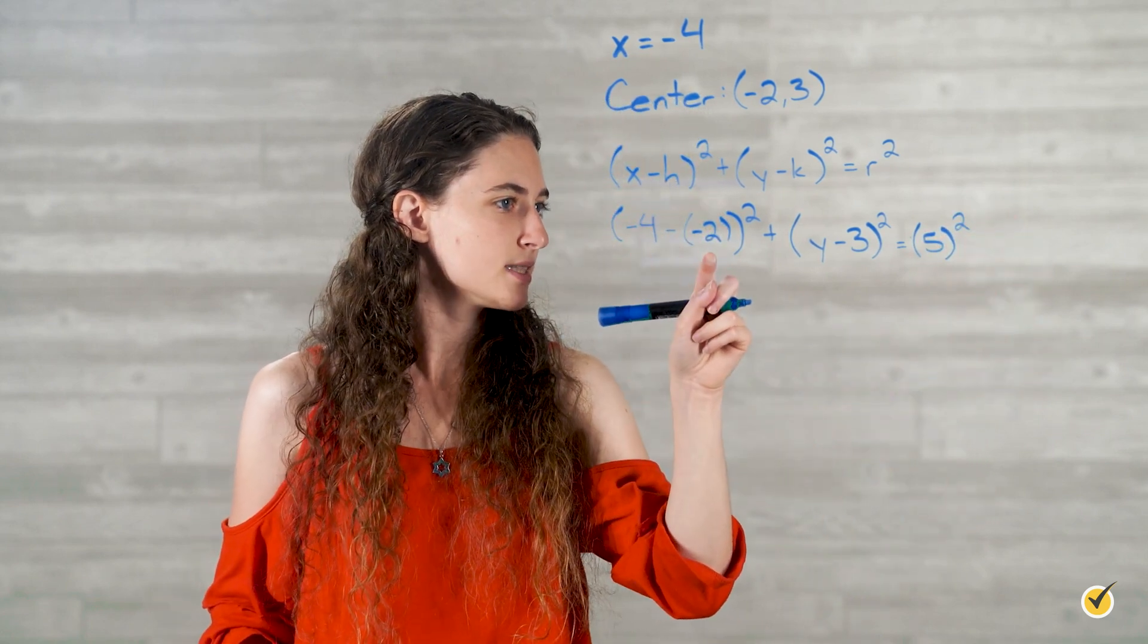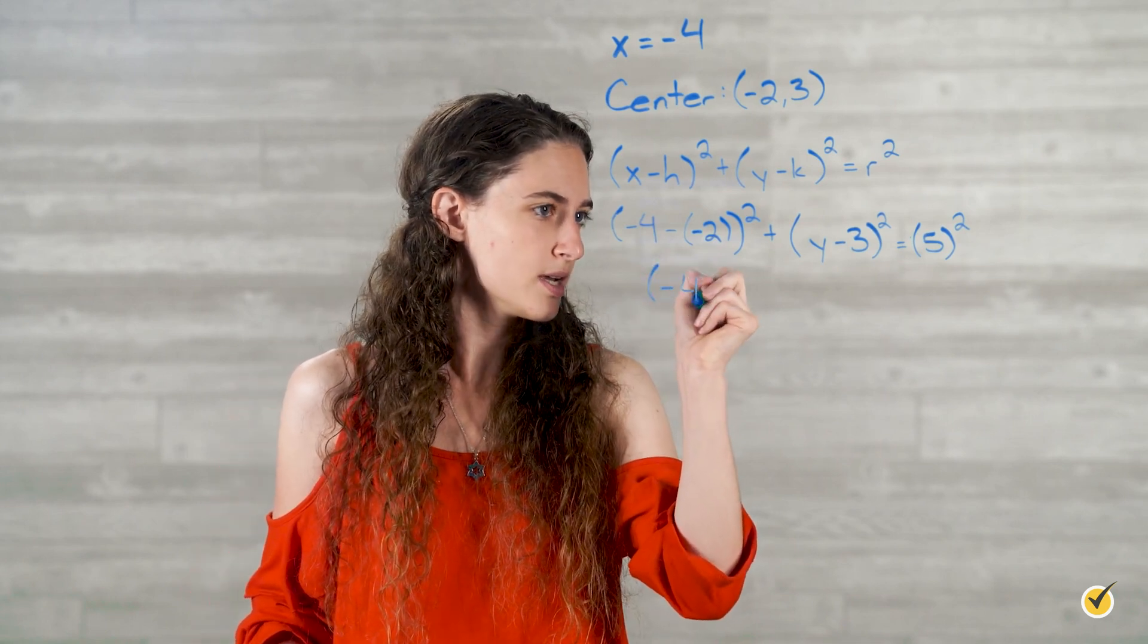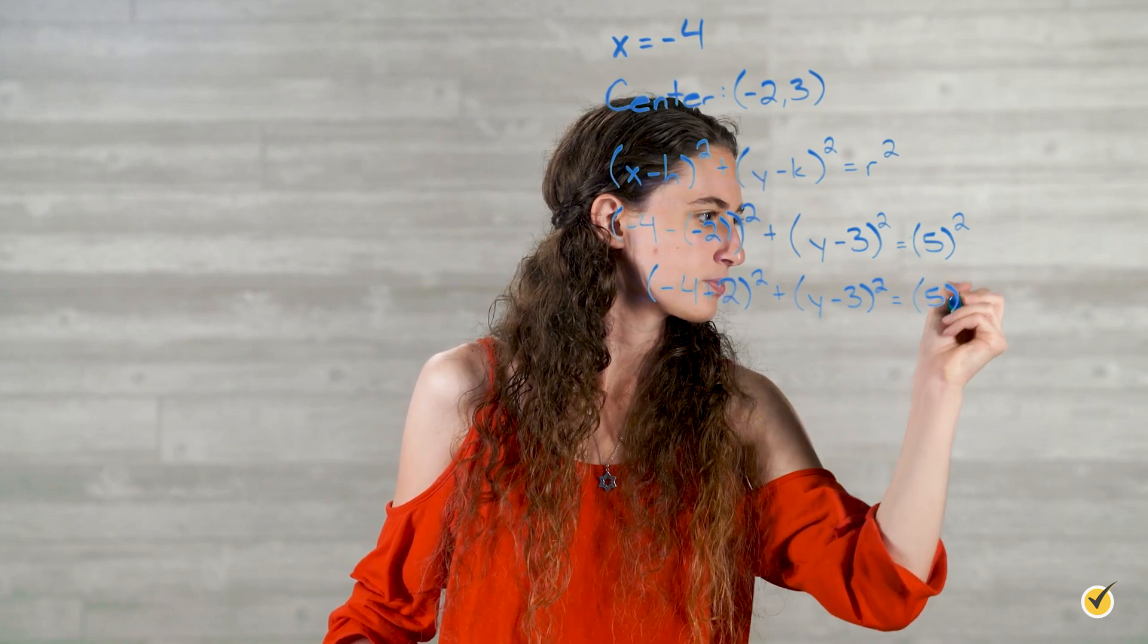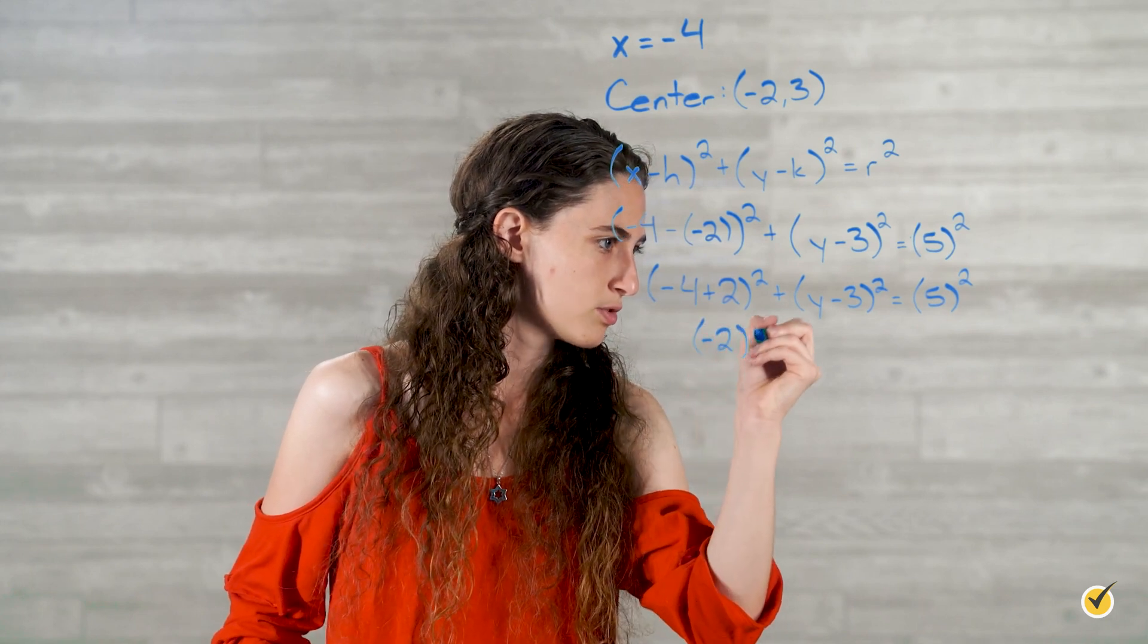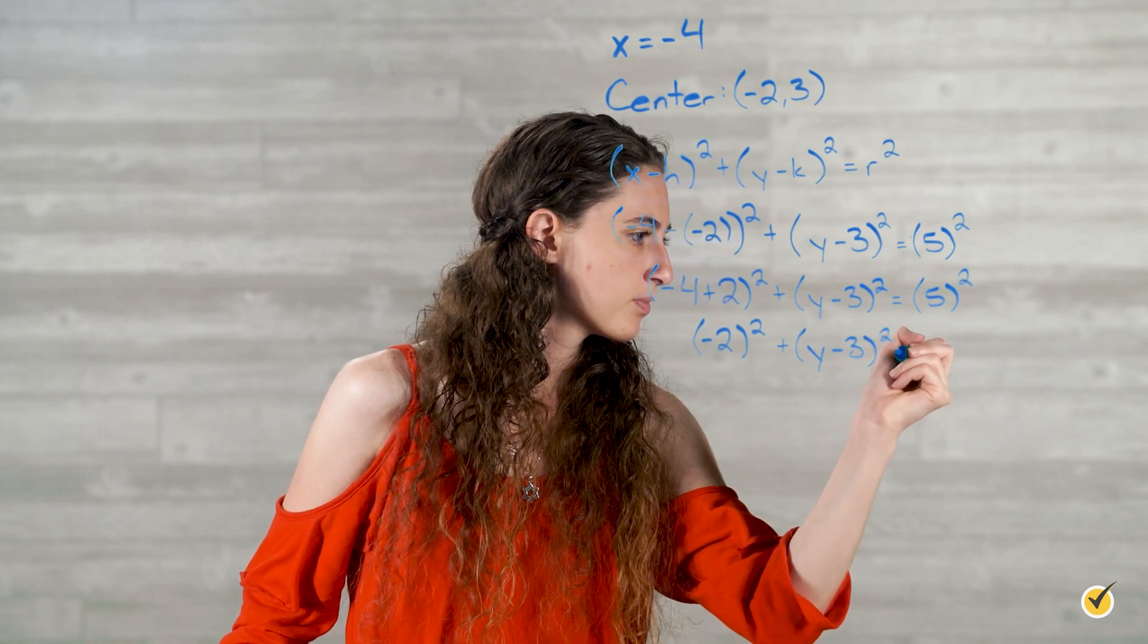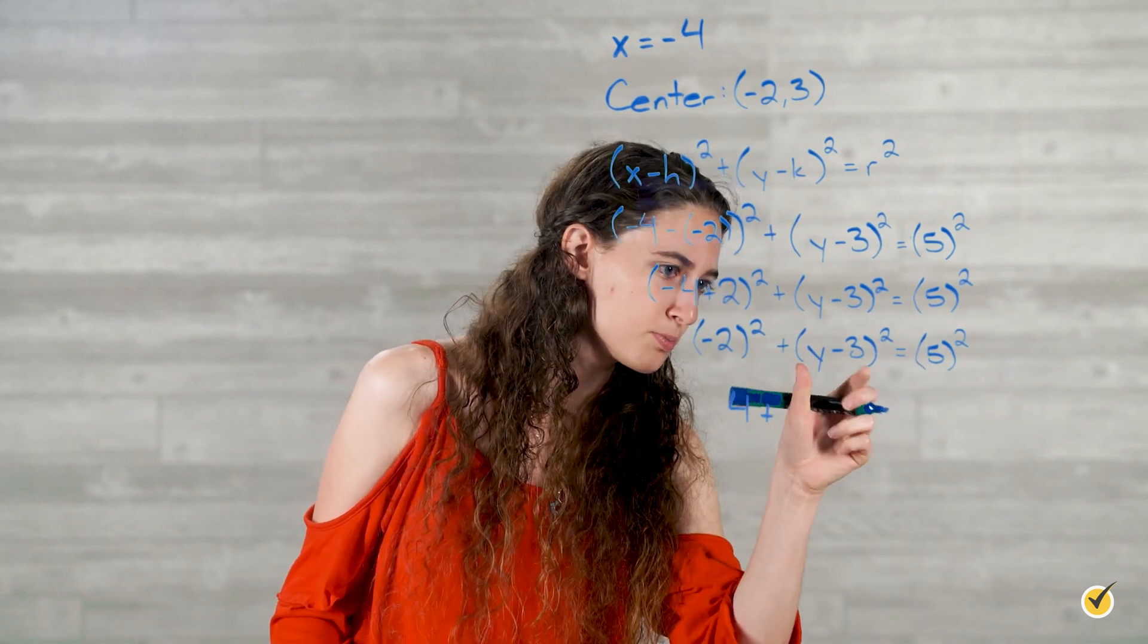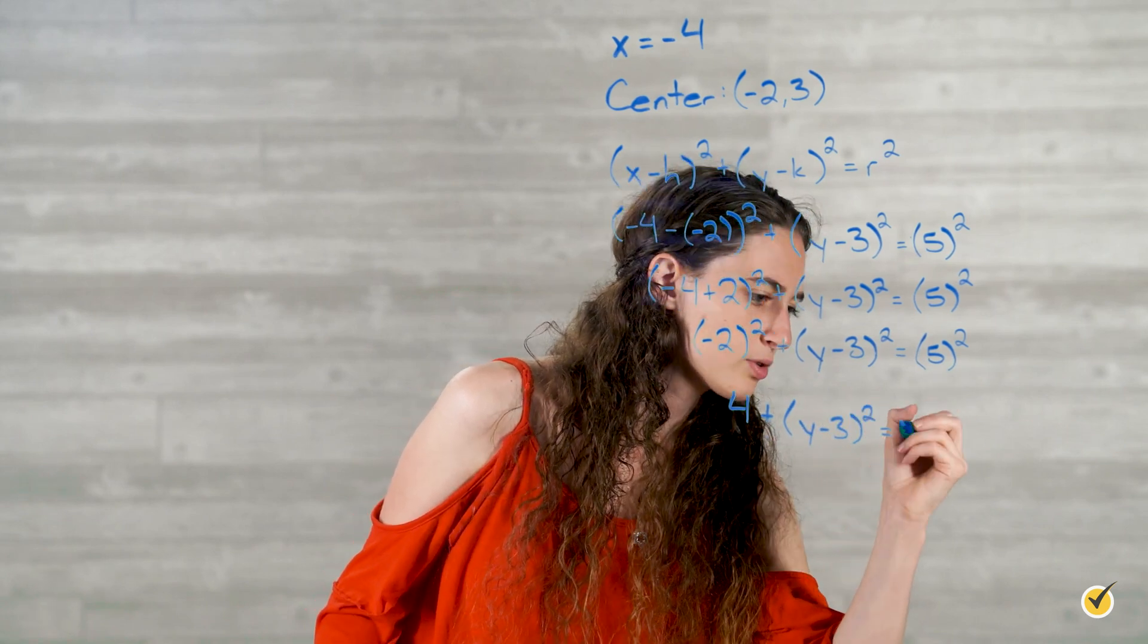So -4 minus -2, that's the same as saying -4 plus 2. So let's rewrite it that way: -4 plus 2 squared plus y minus 3 squared equals 5 squared. Then we'll simplify this to -2, so -2 squared plus y minus 3 squared equals 5 squared. And now we're going to simplify our exponents. -2 squared is 4 plus, we'll leave this part alone for right now, we'll come back to that later, y minus 3 squared equals 5 squared is 25.